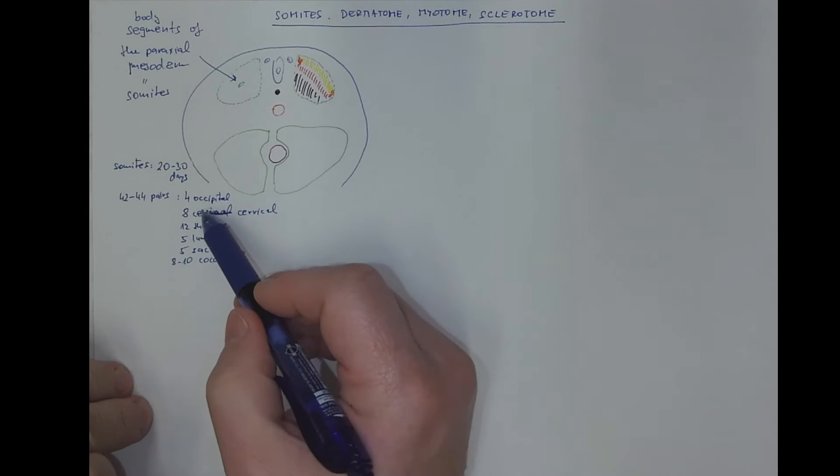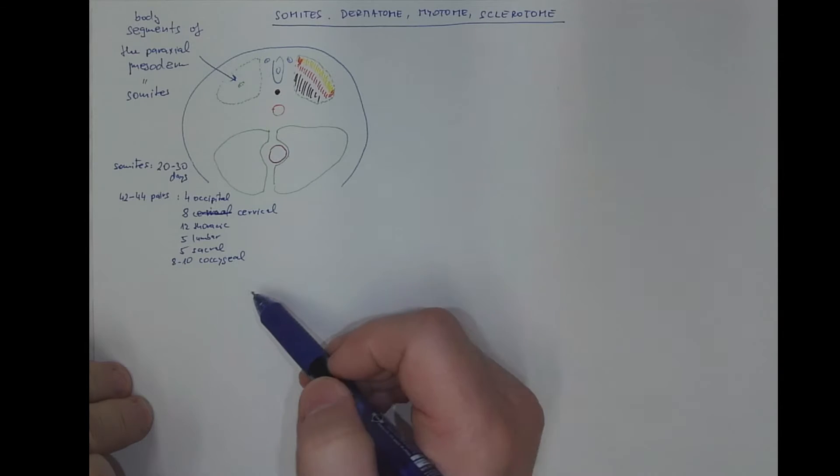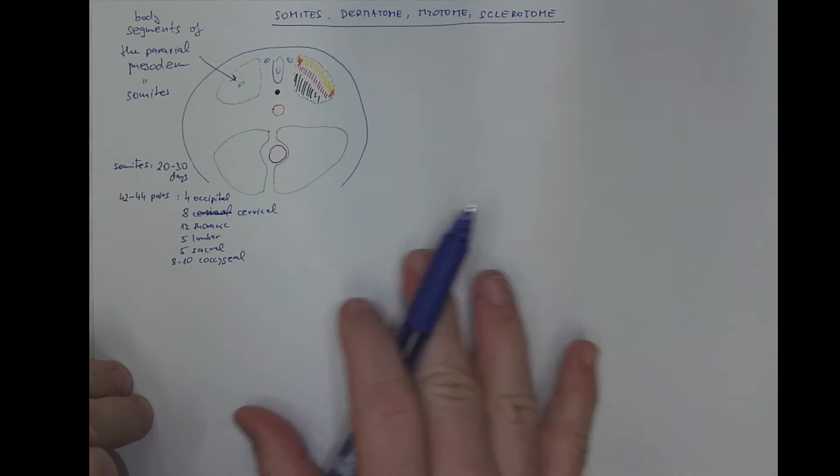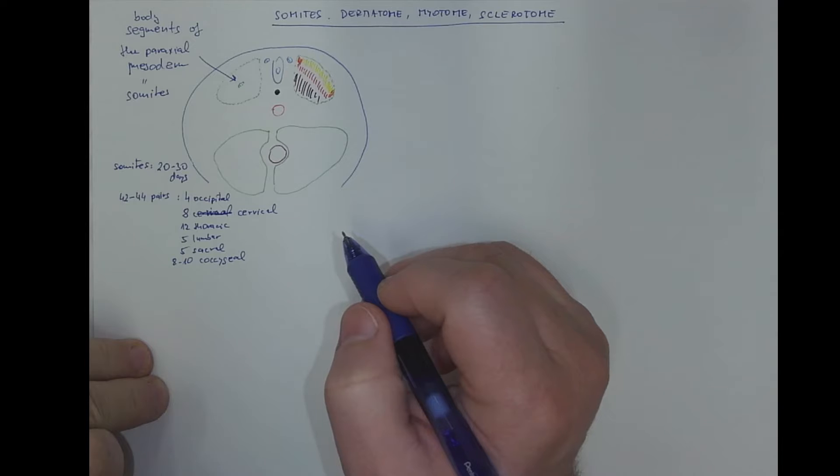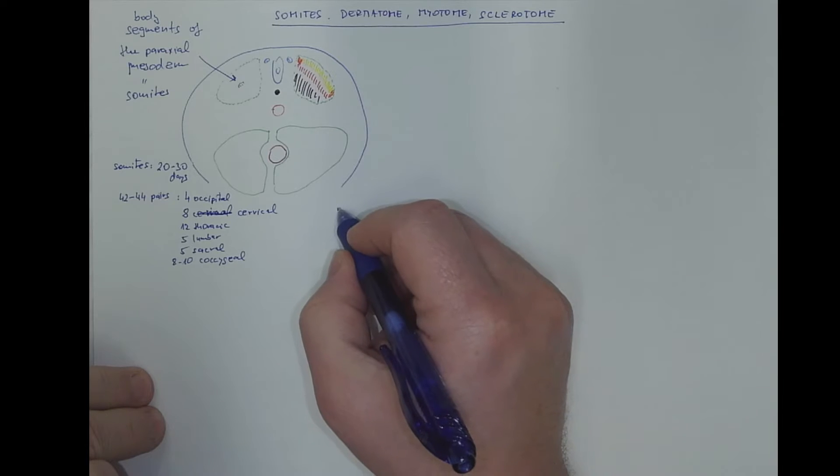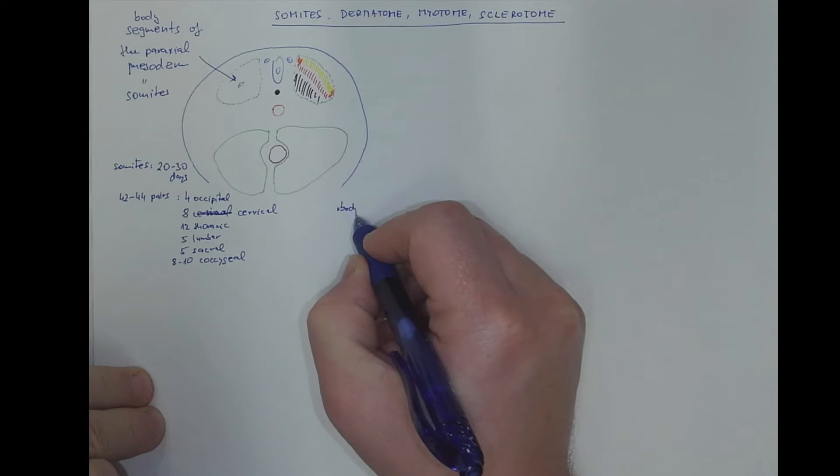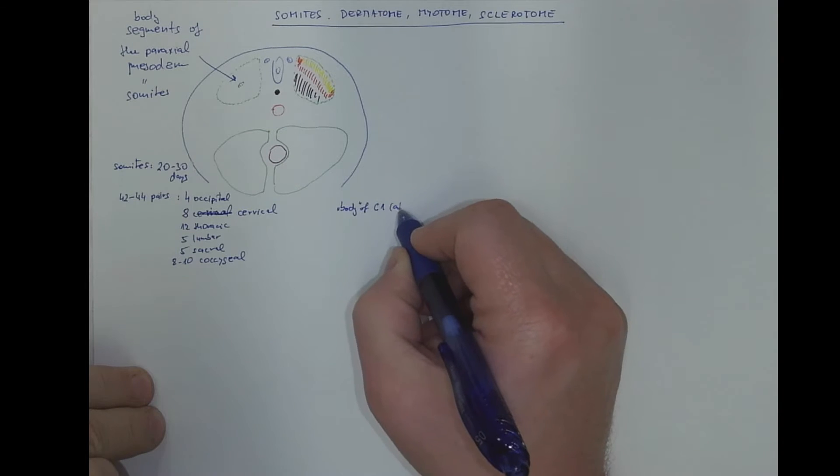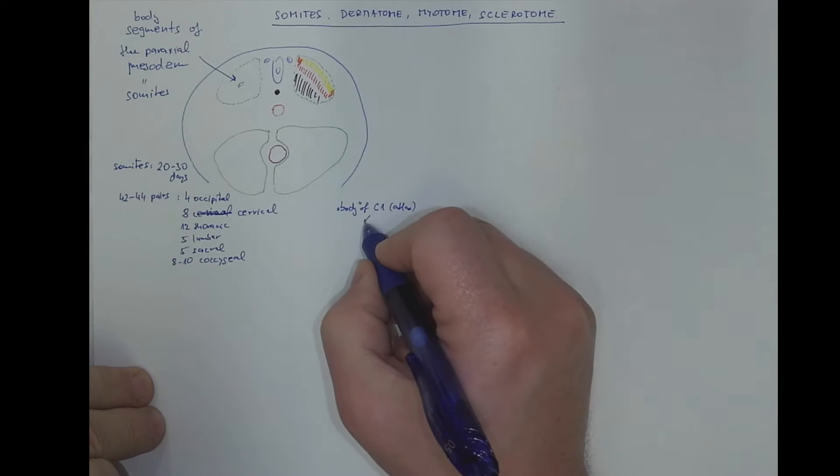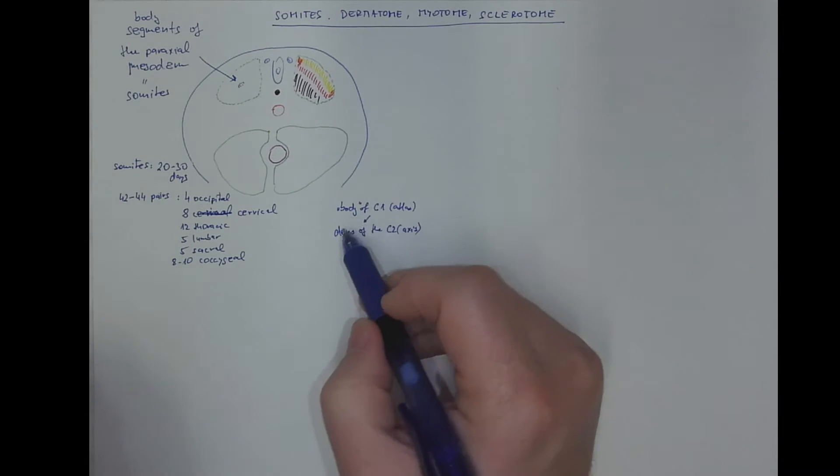Not all of these are present at the same time. They are formed and gradually remodeled and undergo further development as we will show. There are some peculiarities. The material supposed to be the body of C1 of the atlas actually will contribute to the formation of the dens of the C2, the axis. So it has no body, the C1.